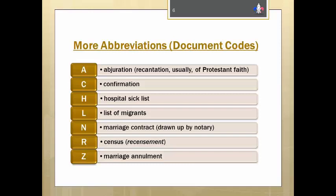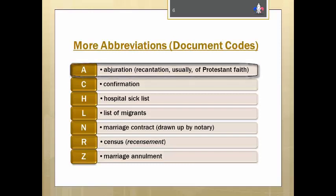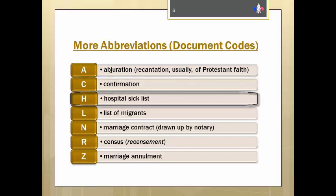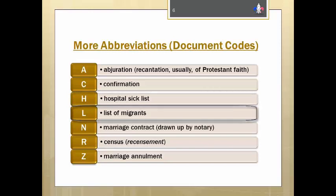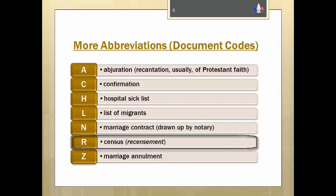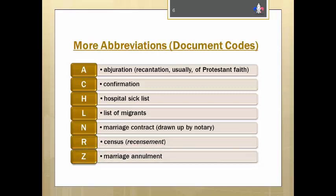Other less common abbreviations known as the document codes found in the printed PRDH are the following: A for abjuration, which as I explained in part one was a renunciation of one's Protestant faith; C for a confirmation list; H for the sick list from the various hôpital or hospitals; L for the list of migrants. Now just to confuse everyone, N for a marriage contract, even though N is also used as the abbreviation for birth — this N indicates that the record was drawn up by a notary, which applies to marriage contracts. R for a census, because the French word for census is recensement, and Z for a marriage annulment. Keep these in mind as we look at the various records in parts three and four.